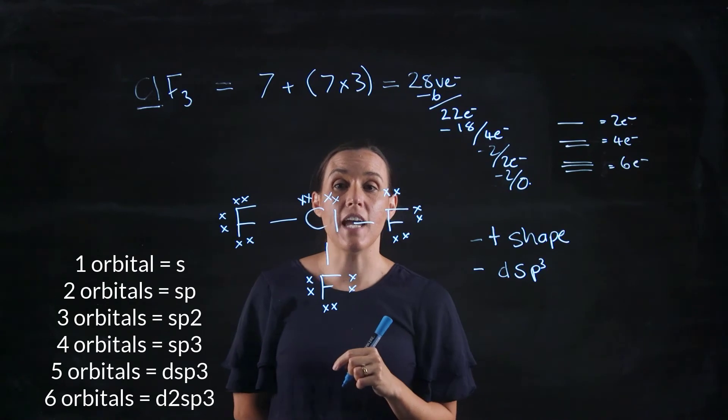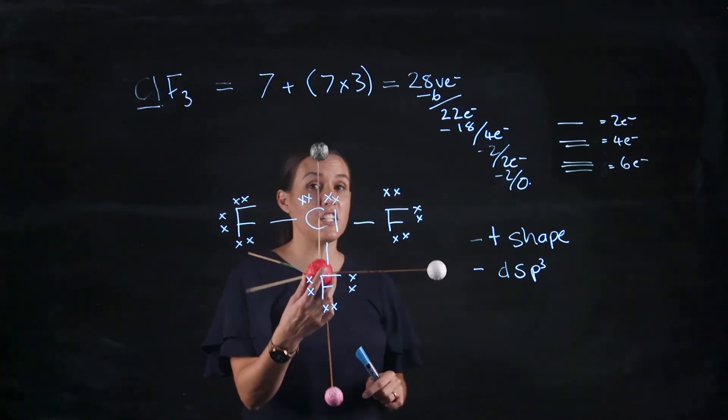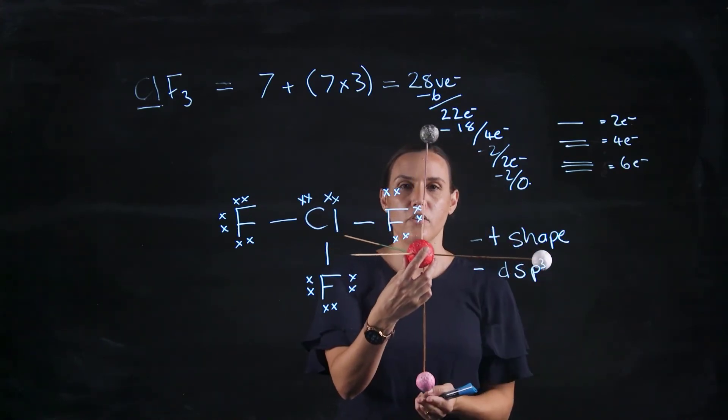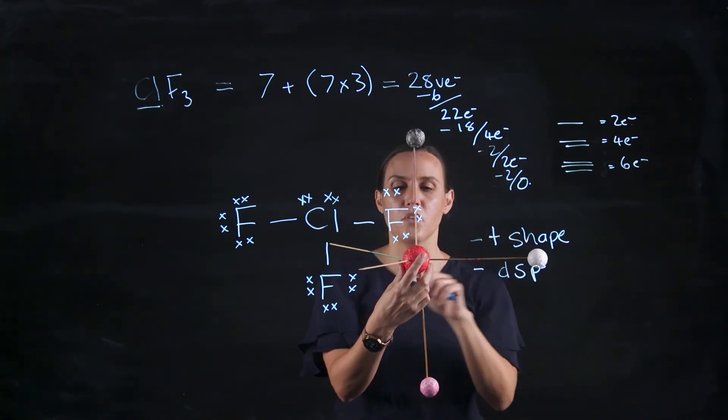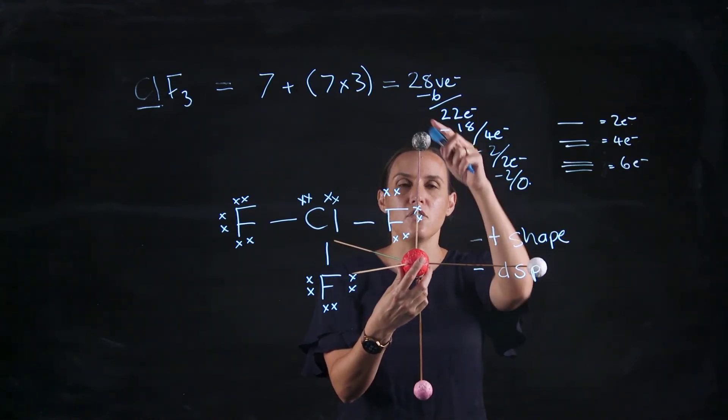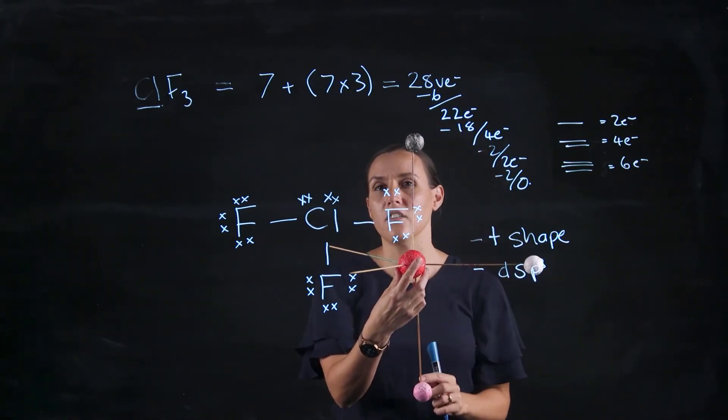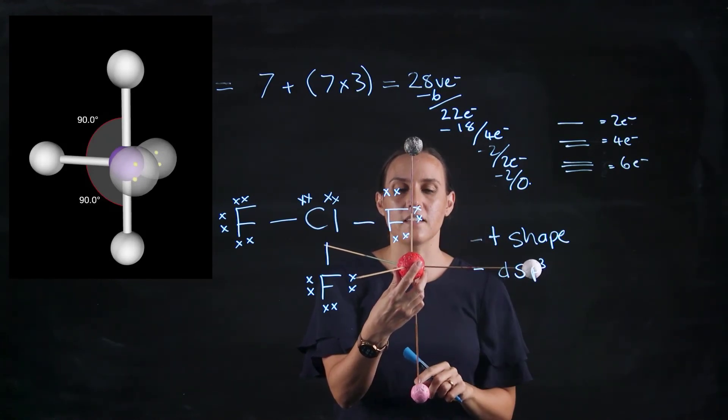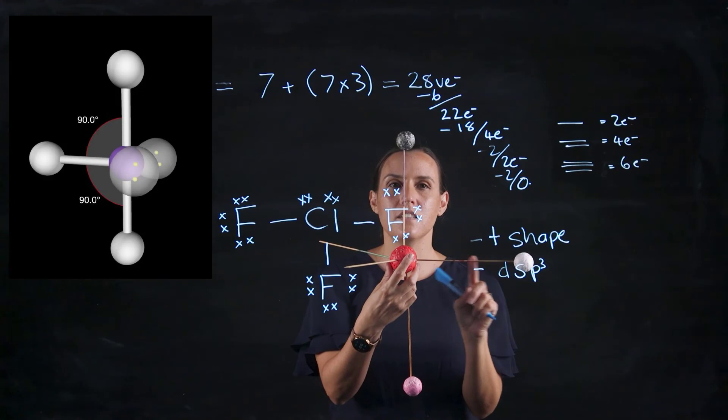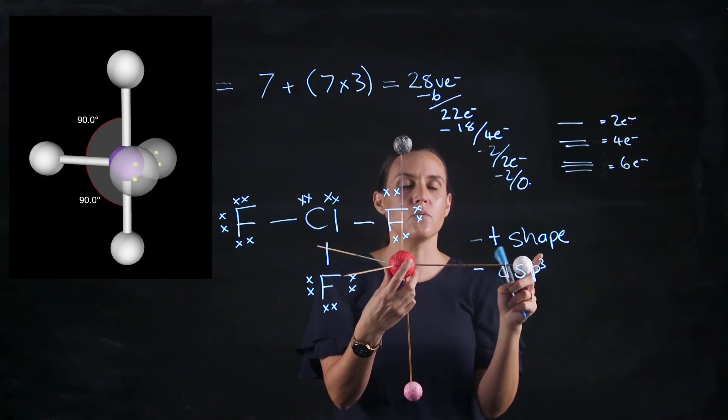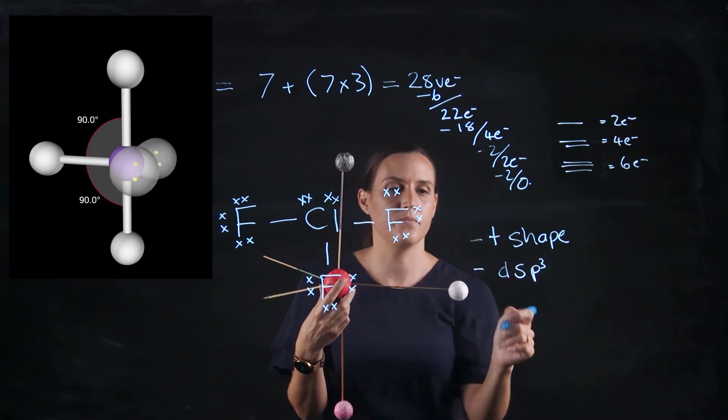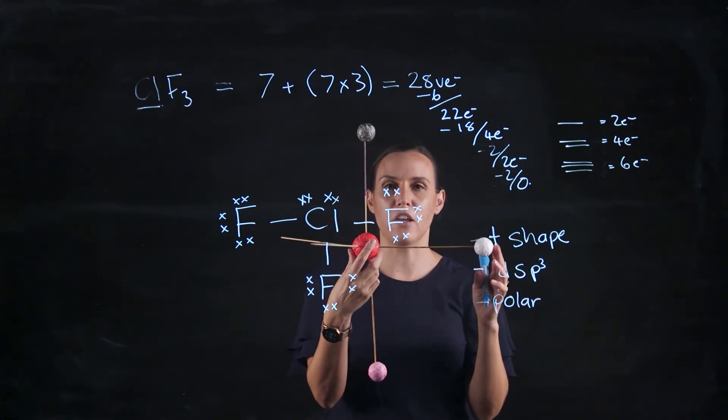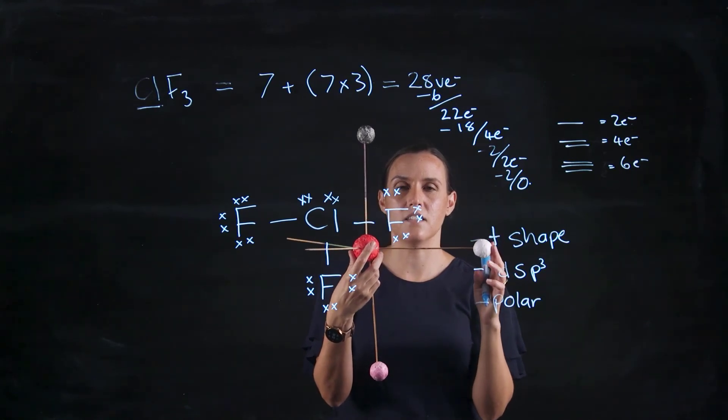Now going back to the shape, we need to think about the polarity. So this is the shape that we have. We've got one fluorine up, one fluorine down, and we've got one fluorine in the middle here, and we've got two lone pairs. So these two fluorines would cancel each other out. Their pull would be the same on those bond electrons, and they'd cancel out. But this one here doesn't have anything to cancel out with. So this would be a polar molecule.